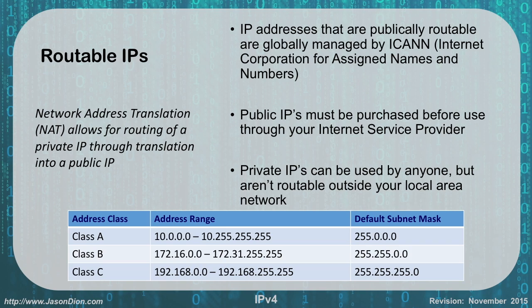When we look at Class A, B, and C, each has its own private range. In the Class A range, anything starting with a 10 — so 10.0.0.0 all the way through 10.255.255.255 — is usable as a private IP, with a default mask of 255.0.0.0. For Class B, it's 172.16 through 172.31. So if you had 172.15.something, that's public; but if it's 172.16 or higher in that range, it's private, with a default mask of 255.255.0.0. Class C is 192.168.anything.anything, so if it starts with 192.168, it is a Class C private address, with a default mask of 255.255.255.0.